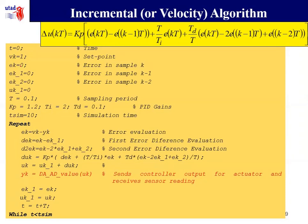The algorithm for the velocity is more or less the same as before. What changes is that now we got the difference of the error and the second error difference. And of course, instead of evaluating the absolute value, we evaluate the delta, delta U. And then we just become this delta U and update the previous value of the controller. This implementation has an advantage because as we don't have the sum of the integral, this implementation is less sensitive to integral windup.